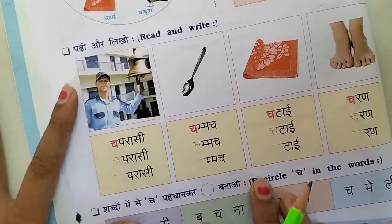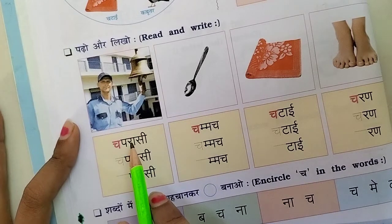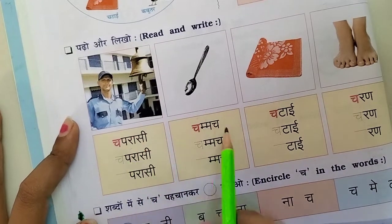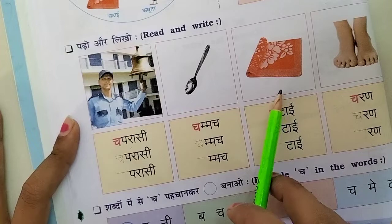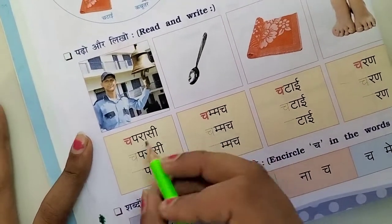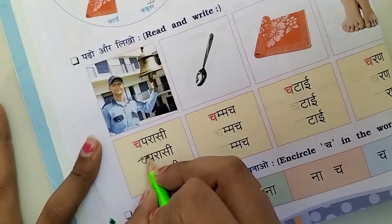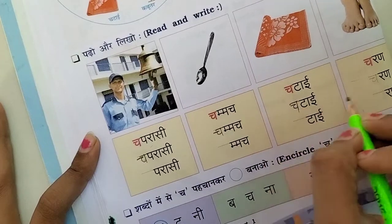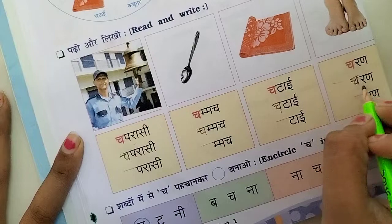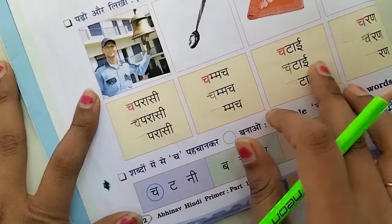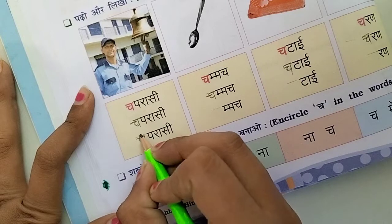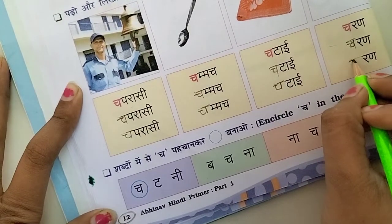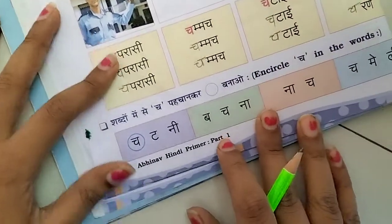चल, उसके बाद पढ़ो, और लिखो — यानि कि च से कौन से पिक्चर होते हैं। च से क्या होता है — च से चपरासी यानि कि वॉचमेन, च से चम्मच, च से चटाई, च से चरण। तो चलो सबसे पहले ये छोटी वाली ट्रेसिंग है ना आप कर लो, थोड़ी सी स्लीपिंग, कर्व, स्टैंडिंग — अच्छे से आपको ट्रेसिंग हो जाए। बाद में आप लिख सकते हो, या आप जब नोटबुक और टेक्स्टबुक में लिख लो, उसके बाद प्रो पर आ जाएं, तब लिखना। कोई जल्दी नहीं है।